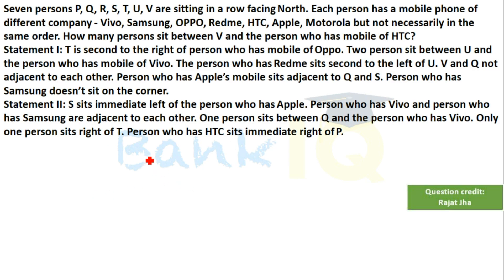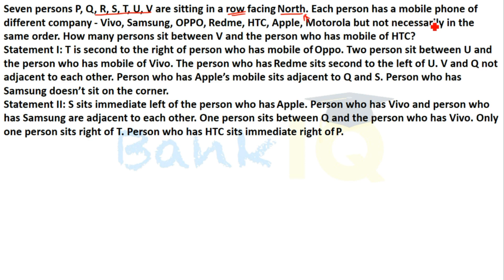The first question: seven persons are sitting in a row facing north. Each person has a mobile phone of a different company, but not necessarily in the same order. How many persons sit between V and the person who has a mobile of HTC?